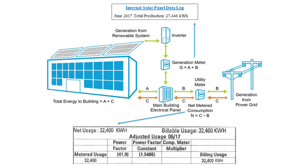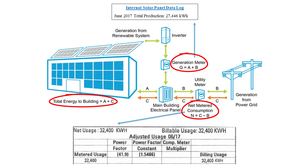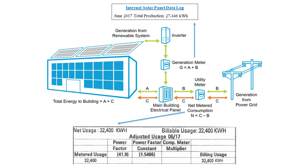Now let's look at a new example, where the utility is only providing the net metered consumption value, which they call net usage on this particular bill. This means that the only values we have are the net metered consumption, C minus B, and total on-site energy generation, A plus B. Unfortunately, these values alone are not sufficient for complete and accurate benchmarking, since even though you can calculate total site energy consumption, A plus C, by adding these figures together, you will not have an accurate breakdown of the grid versus renewable energy that was actually consumed by the building. In a few minutes, we will discuss how to handle this situation.